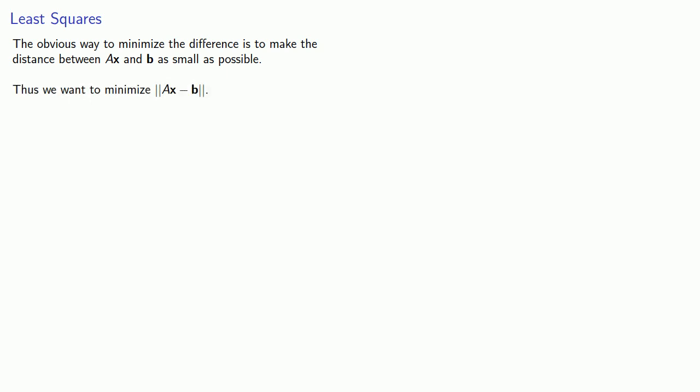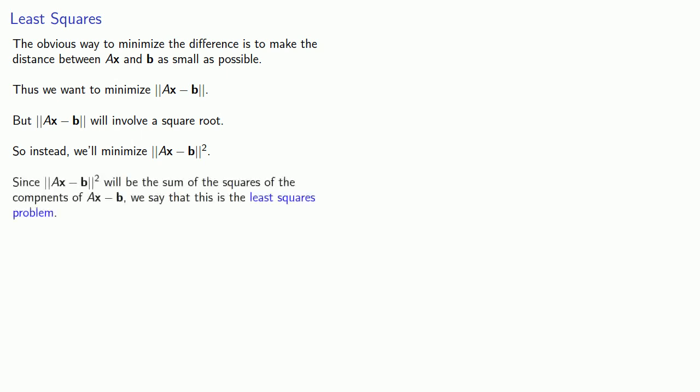But remember, when we calculate a norm this way, this will involve a square root, which is a little bit messy. So instead, we'll minimize the square of the norm Ax minus b. And since the norm of Ax minus b squared will be the sum of the squares of the components of Ax minus b, and we want to minimize the sum, we say that this is the least squares problem.